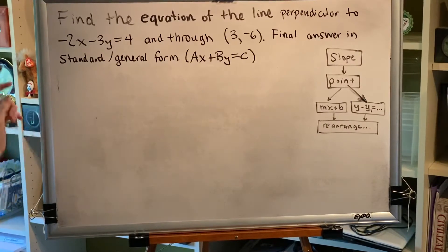Find the equation of the line perpendicular to -2x - 3y = 4 and through the point (3, -6). Express your final answer in standard general form Ax + By = C.